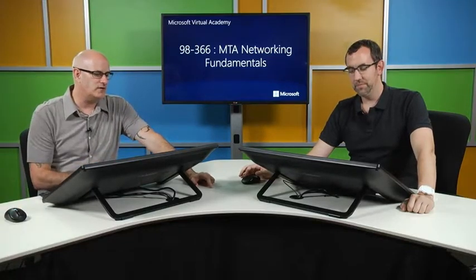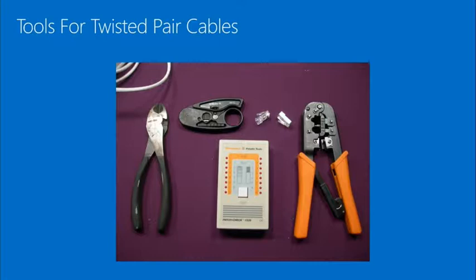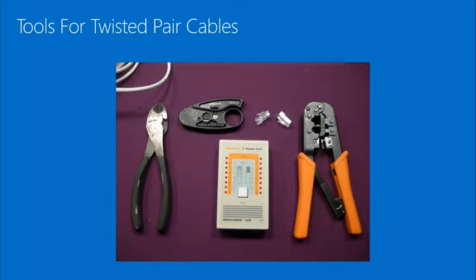The next tool with the little thumb holder is wire strippers for the rest of us — you put the wire in, close it, and it strips the cable off automatically at the right offset. The orange-handled devices are jack crimpers: you put the jack in, put the wire in, punch it, and it punches everything down. And in the middle, we have a cable tester.